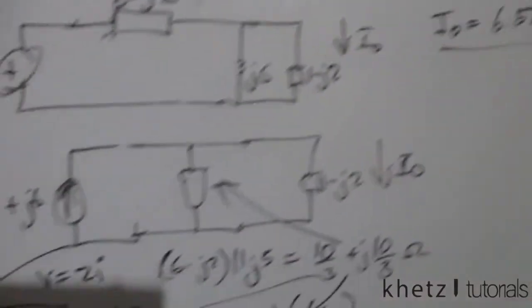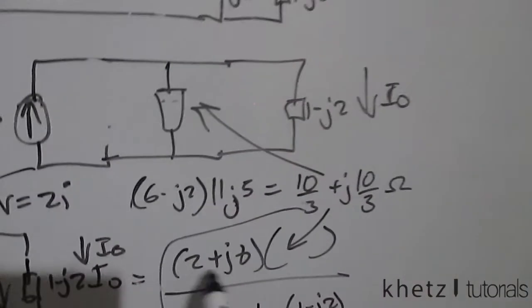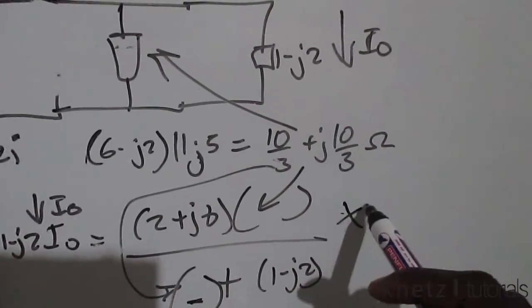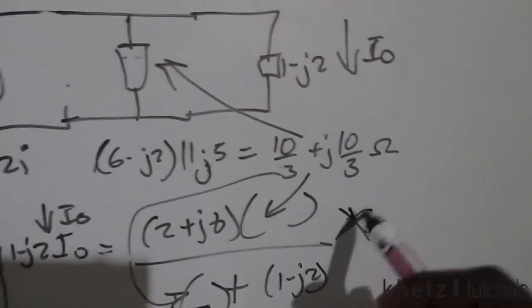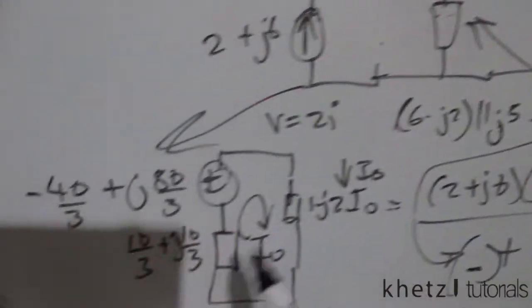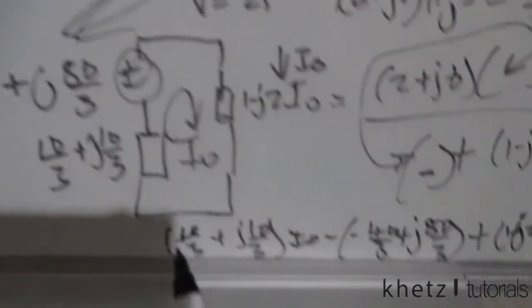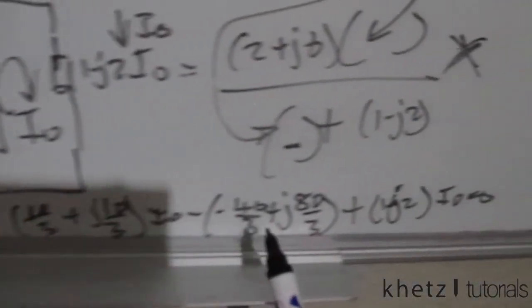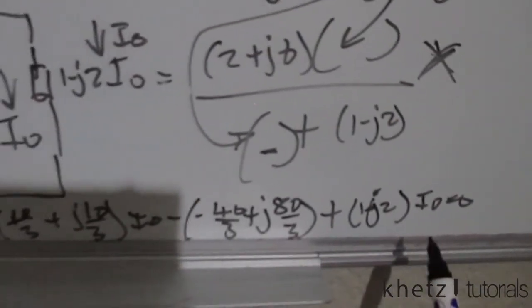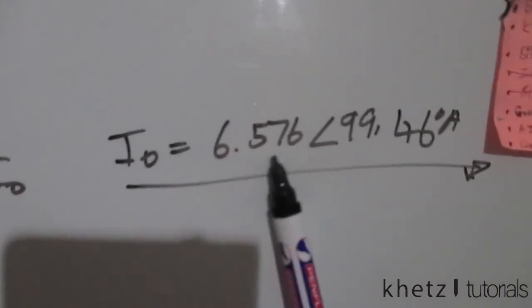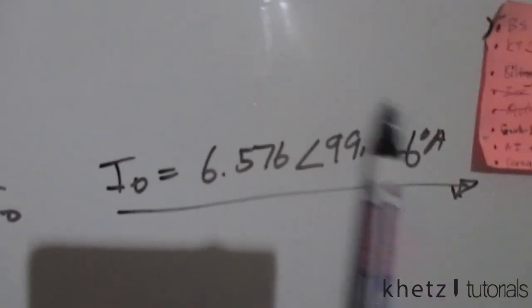Whether you do current division or proceed with one more transformation and apply KVL, you should still get the same value of I_O.